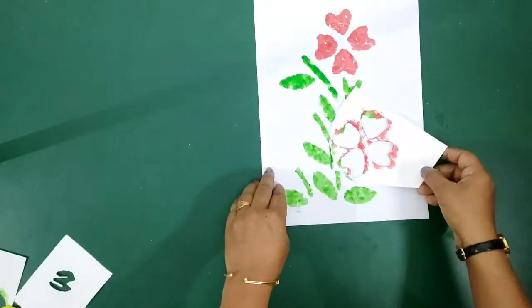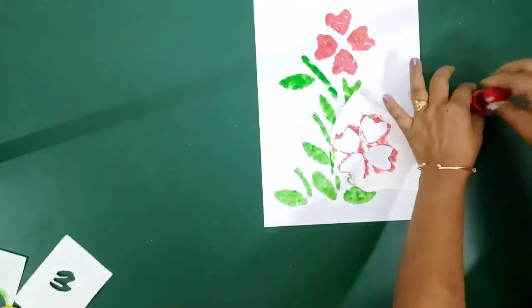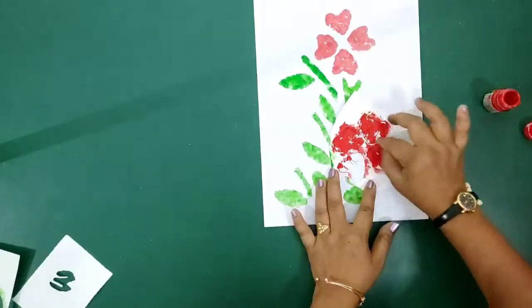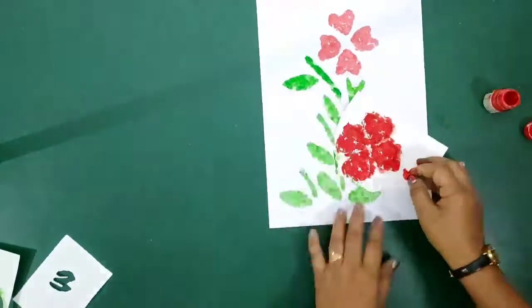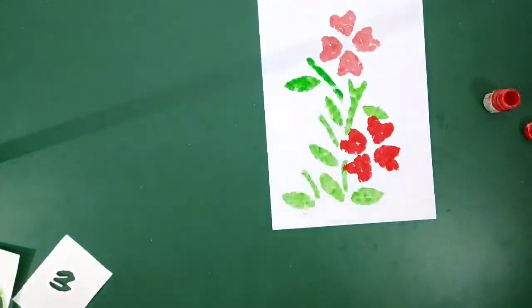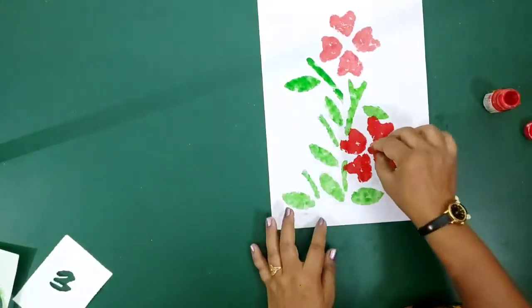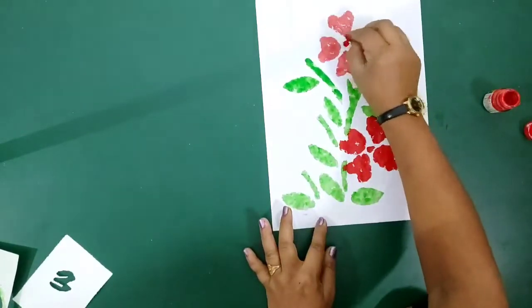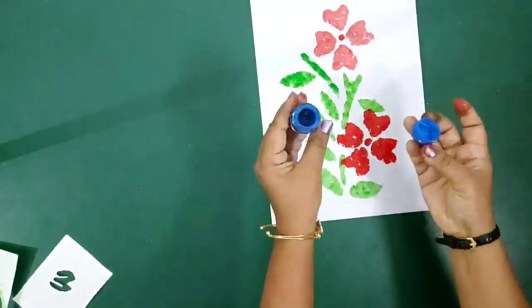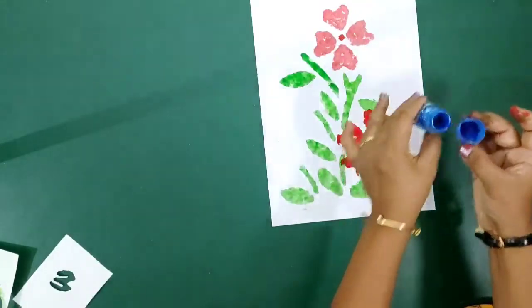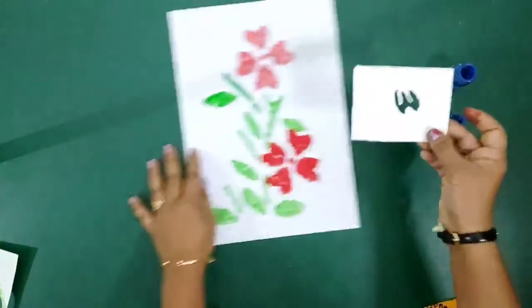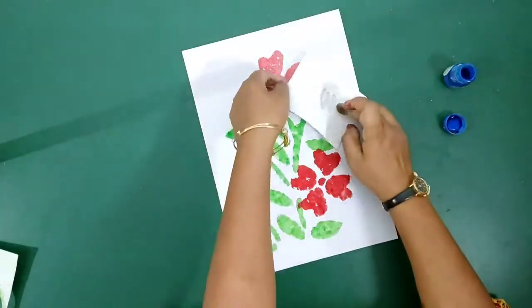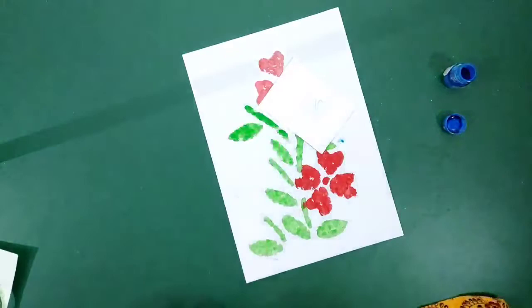Now use the flower part of the stencil again using red color and make a flower. Now using blue color and other cutout of flower, let us make some more flowers. Connect the flowers and the stem.